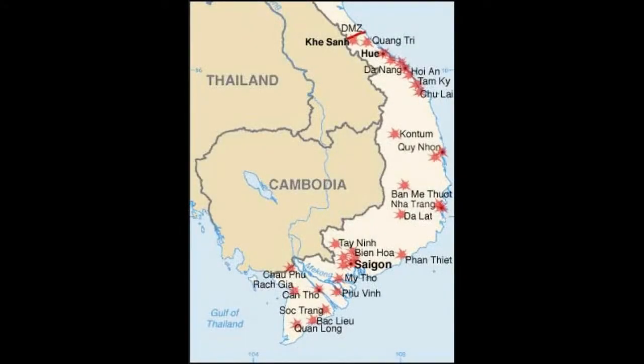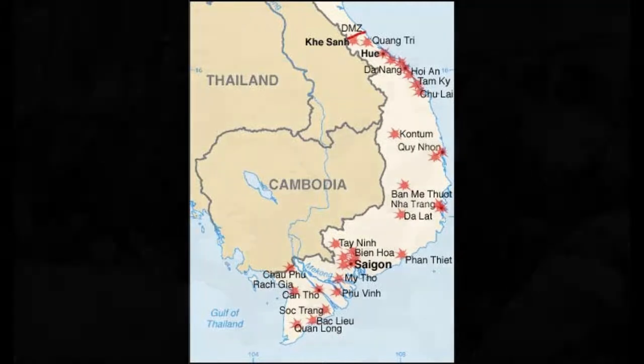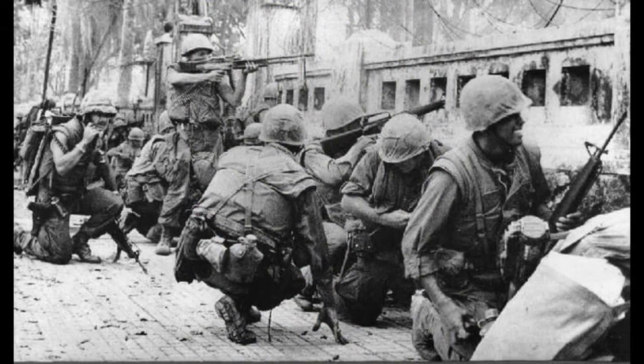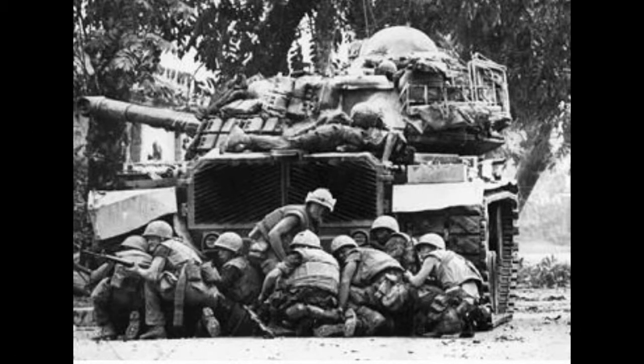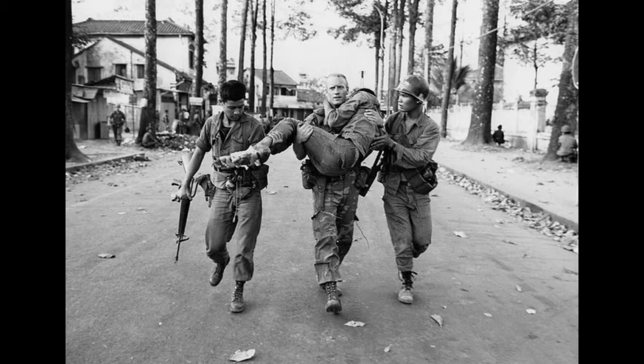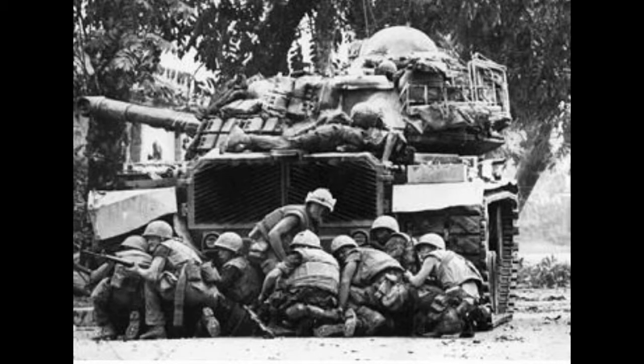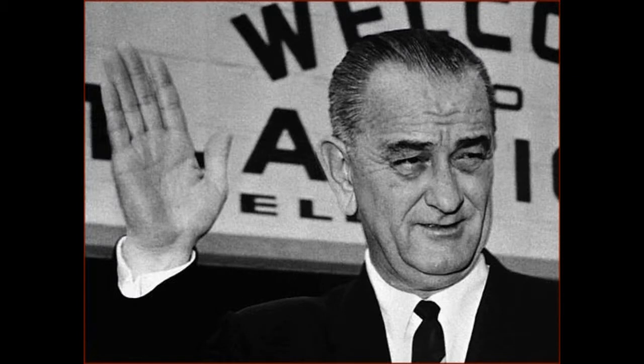On January 30, 1968, North Vietnam surprised both U.S. forces and South Vietnam by orchestrating a coordinated assault with the Viet Cong to attack about a hundred South Vietnamese cities and towns. Although U.S. forces and the South Vietnamese army were able to repel the assault, known as the Tet Offensive, this attack proved to Americans that the enemy was stronger and better organized than believed. It was a turning point in the war, as President Johnson decided to no longer escalate the war.